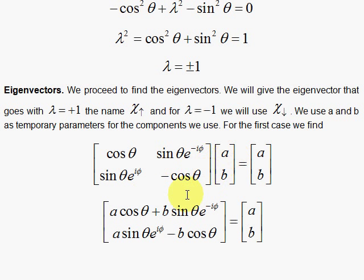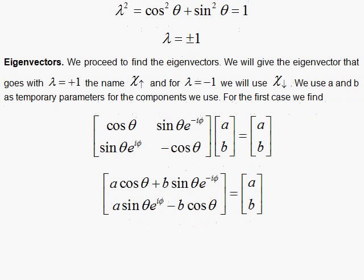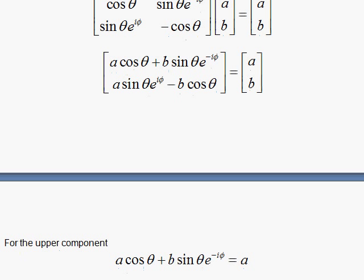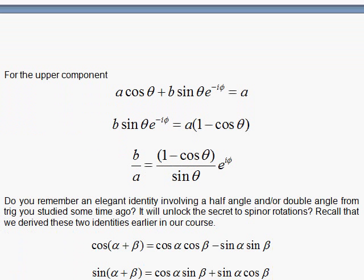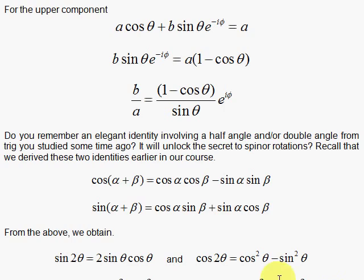The second condition is: sine theta e to the i phi times a minus cosine theta times b equals b. Using the top equation, we solve for the ratio b over a. Combined with the normalization condition, we have two equations with two unknowns.